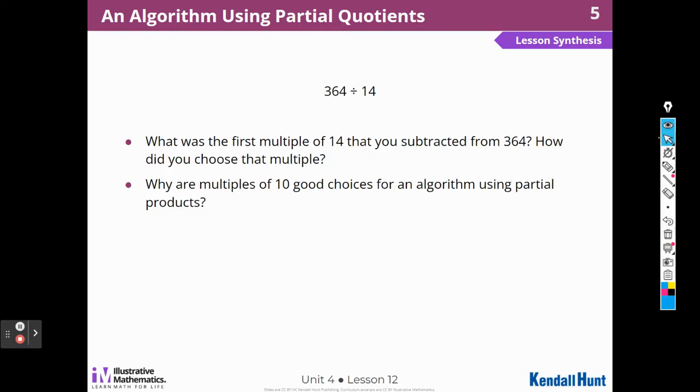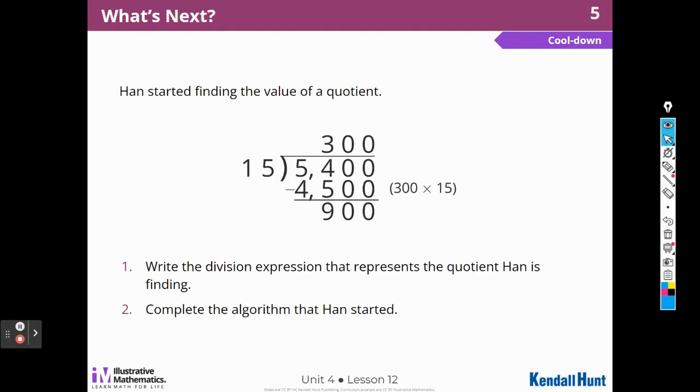See what's next. Oh, we have a cool down. Han started finding the value of a quotient. Write the division expression that represents the quotient that Han is finding. Okay. Well, the quotient is 5400 divided by 15. There's my division expression. Remember, expression does not have an answer. And then they want us to complete the algorithm.